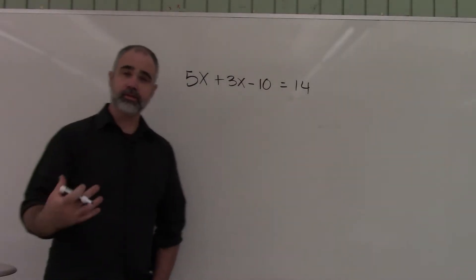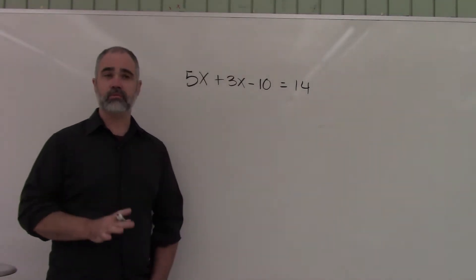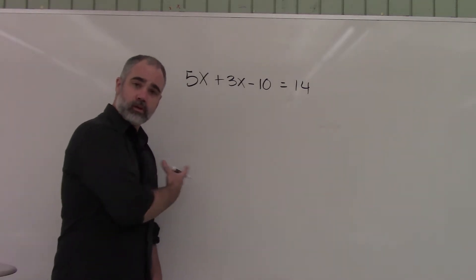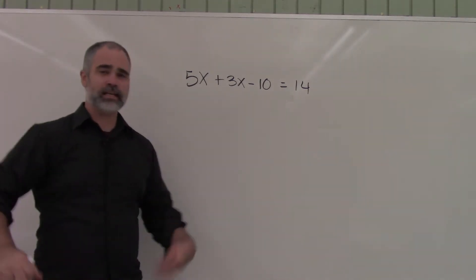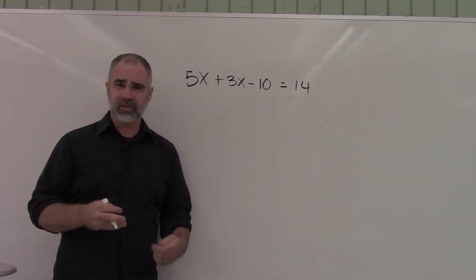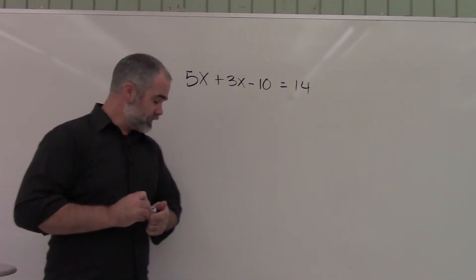Alright, so here's another weird situation you might see, where you've got x in more than one place. You have a variable in more than one location. I've got a 5x here, and a 3x there, and then 10. This is kind of weird looking, like, okay, so what do I do? Do I divide by 5, or 3, or what should I do?